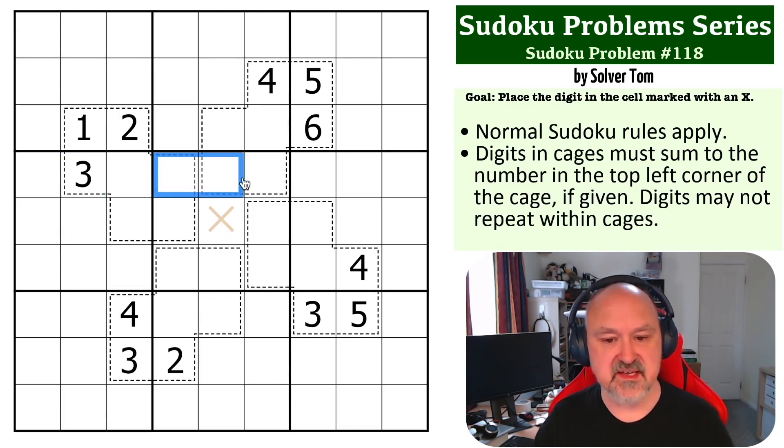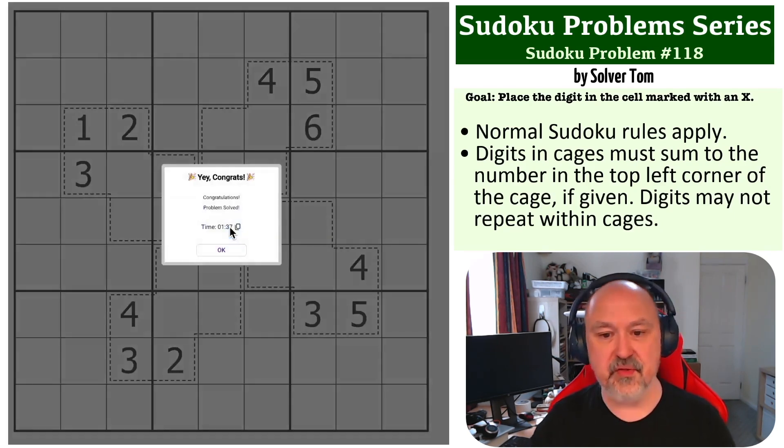So this 3 sees all of those cells. This 3 sees those two cells by killer logic. This 3 sees those two cells by killer logic. And this 3 sees this cell by killer logic. So we cannot put 3 into any of those cells, but we have to put a 3 in the box. So we put a 3 in the middle, and that's the solution to the problem.